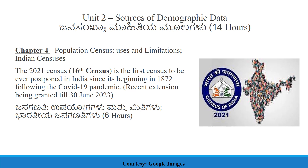This chapter is the 4th chapter and covers six hours on the census. The census is confirmed to have started in 1872. The extension is being granted till 30th June 2023 as of today, and in case there are any updates, we will be studying them in class when we are talking about population census.